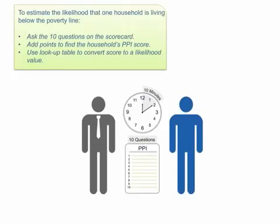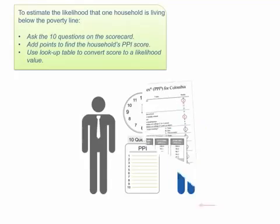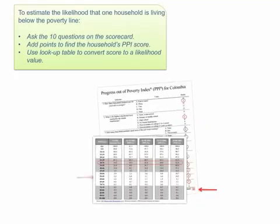First, let's review how the PPI is used to determine the likelihood that one household is living below the poverty line. A representative of your organization asks a member of the household to answer the 10 simple, verifiable questions on the PPI scorecard. This usually takes under 10 minutes. The household receives a score based on the answers to the questions.